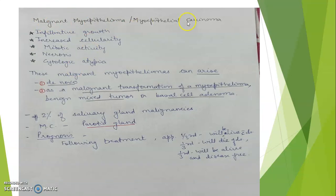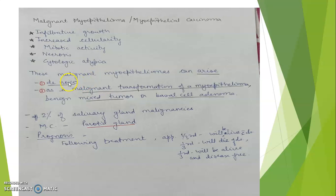Malignant myoepithelioma, or myoepithelial carcinoma, shows infiltrative growth pattern, increased cellularity, increased mitotic activity, presence of necrosis, and cytologic atypia. Malignant myoepitheliomas can arise de novo or as malignant transformation from a pre-existing myoepithelioma, benign mixed tumor, or basal cell adenoma.